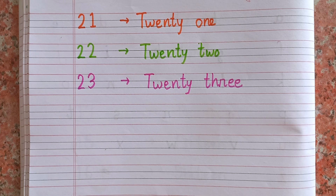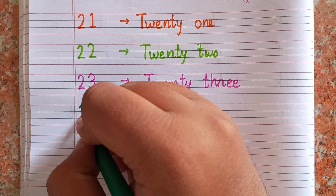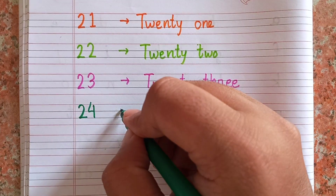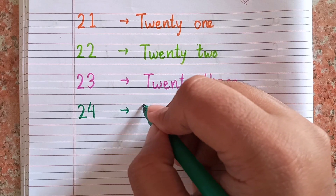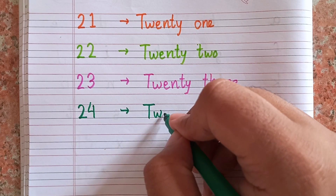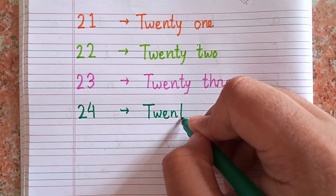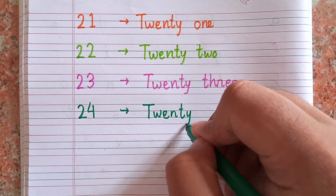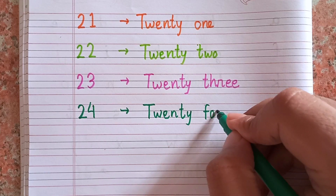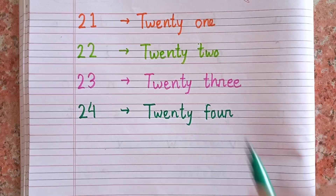After twenty-three, the next number is twenty-four — 2-4. The spelling of twenty-four is T-W-E-N-T-Y F-O-U-R. 24.